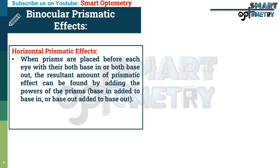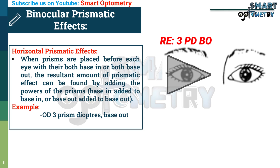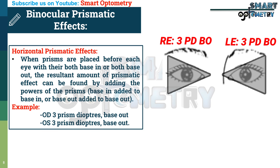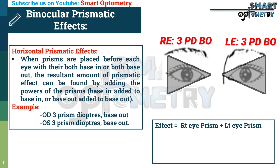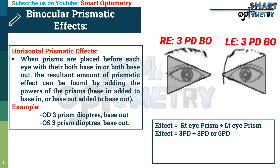For horizontal prismatic effects: when prisms are placed before each eye with their bases both base-in or both base-out, the resultant prismatic effect can be found by adding the powers of the prisms — that is, base-in added to base-in and base-out added to base-out. For example, right eye: 3 prism diopters base-out and left eye: 3 prism diopters base-out. The prisms are placed horizontally with both bases out, so the resultant prismatic effect will be the power of the prism in the right eye plus the power of the prism in the left eye, which is 6 prism diopters.